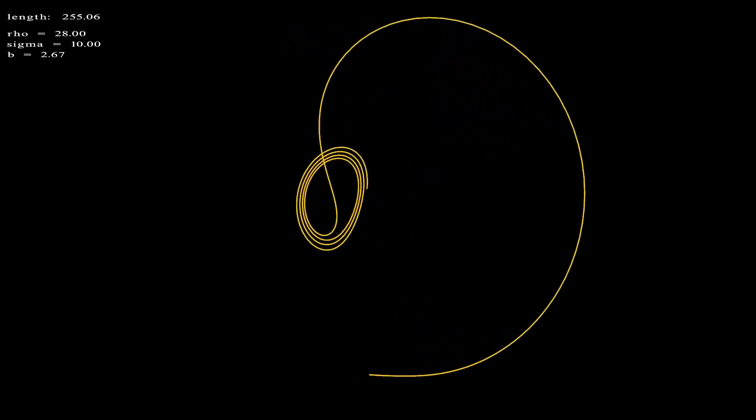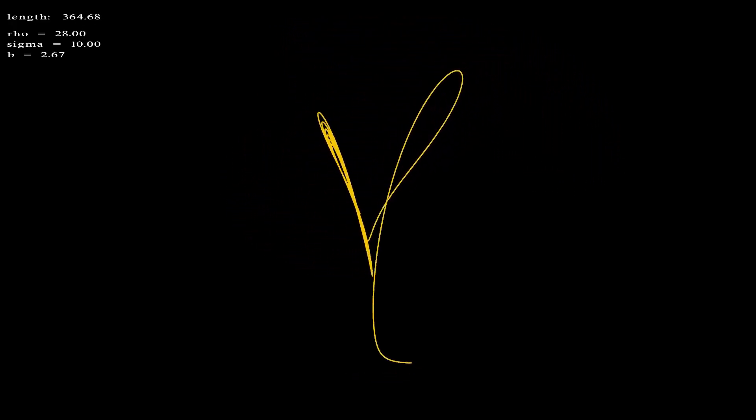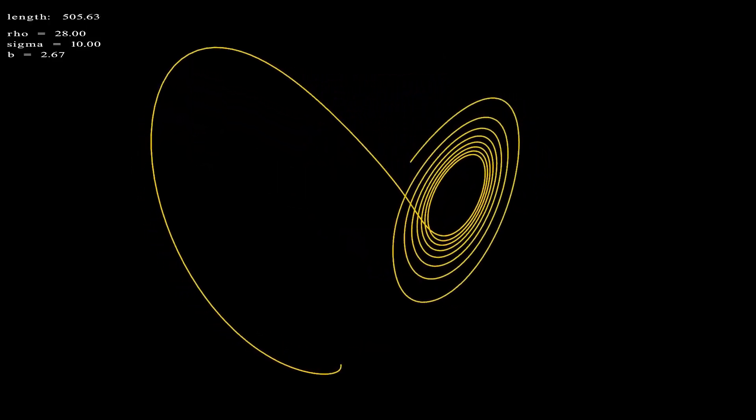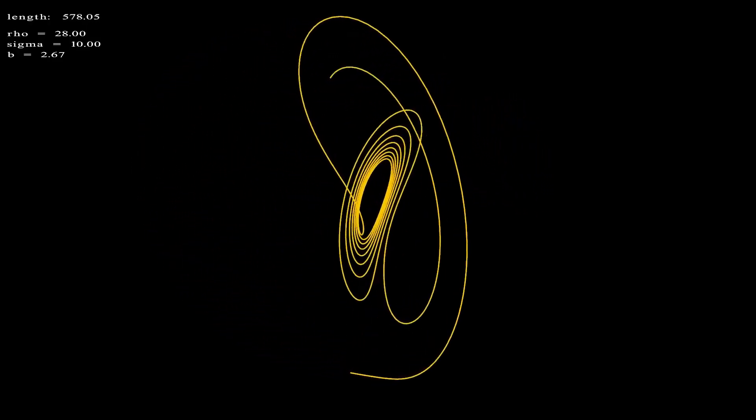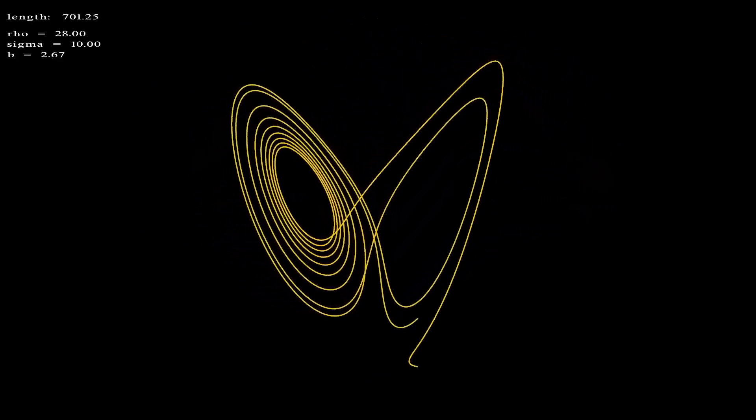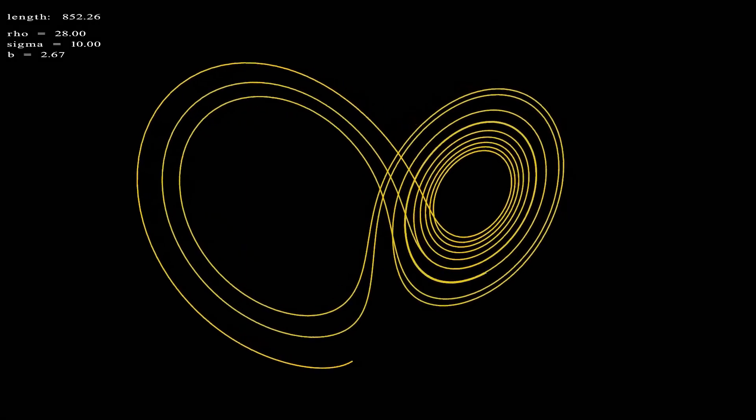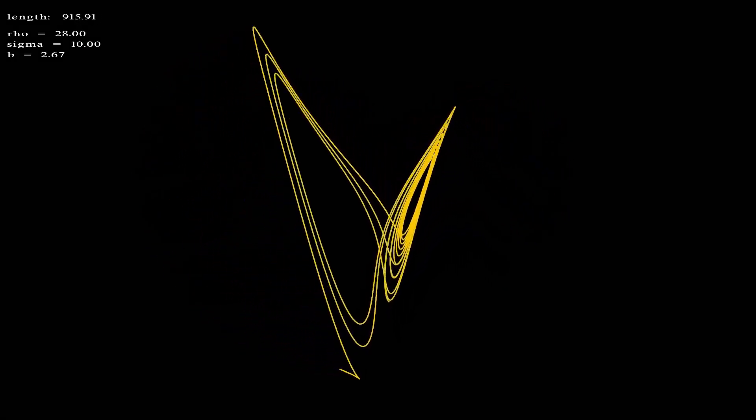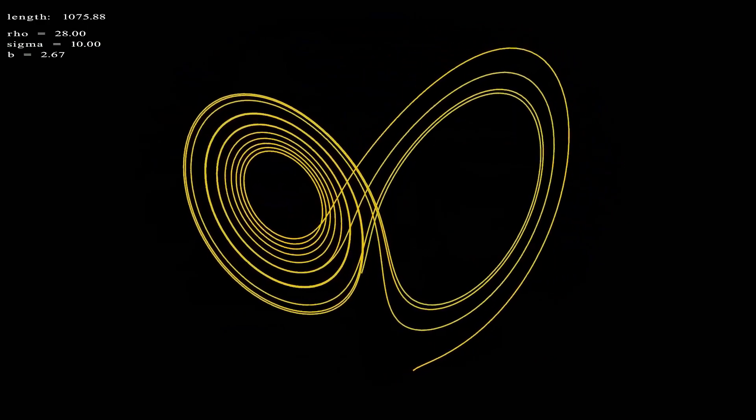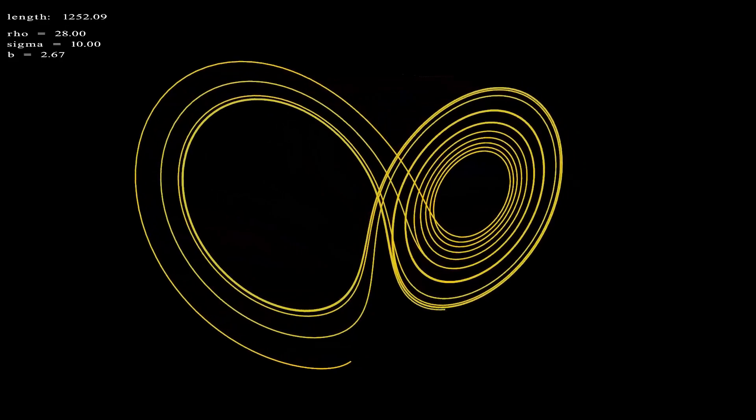There is freedom within, there is freedom without, try to catch the deluge in a paper cup. There's a battle ahead, many battles are lost, but you'll never see the end of the road. Chaos scientists call this a strange attractor, order and chaos combined.